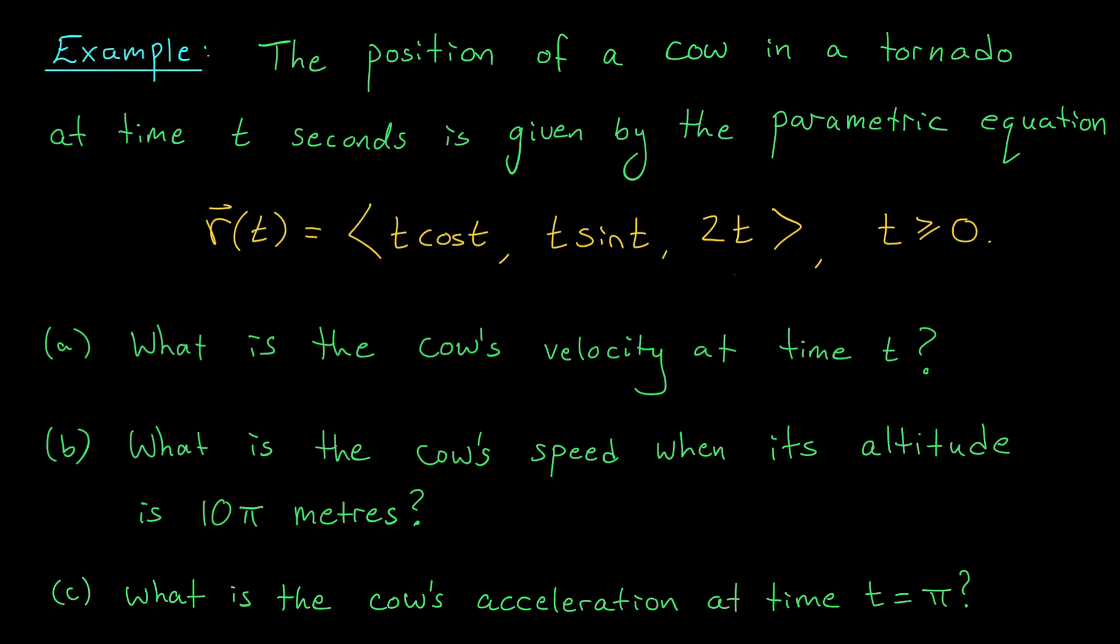First, I want to compute the cow's velocity at a general time t. We'll assume that time here is measured in seconds. Next, in part b, I'd like to know the cow's speed when it reaches an altitude of 10 pi meters. Finally, I'd like to know the cow's acceleration when it reaches a time of t equals pi. So let's jump right in with part a.